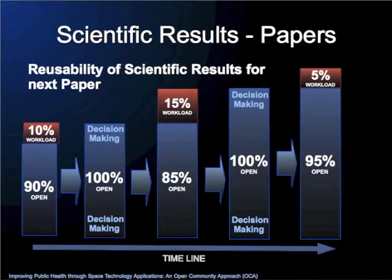You take an existing grammar representing 90% of the currently available knowledge about a subject, add 10% new workload to it, and deliver new results in a specific scientific field — for example, one that contributes to public health risk mitigation — and then generate the scientific paper. This is an iterative process: you add workload, improve the scientific knowledge, add more knowledge, and create another digital product usable for decision making.